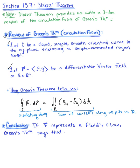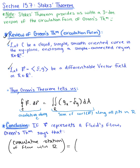So what is this telling us? If a vector field F represents a fluid's flow, then Green's Theorem tells us that the cumulative rotation of the flow within that region R is equal to the circulation along its boundary. We've already looked at Green's Theorem in a previous section.